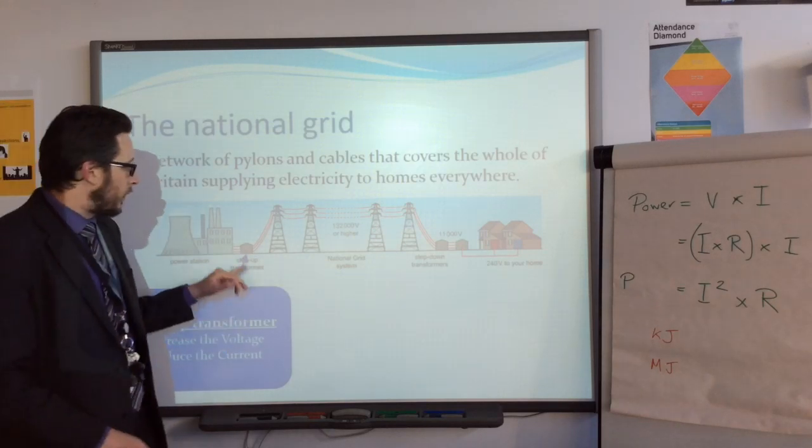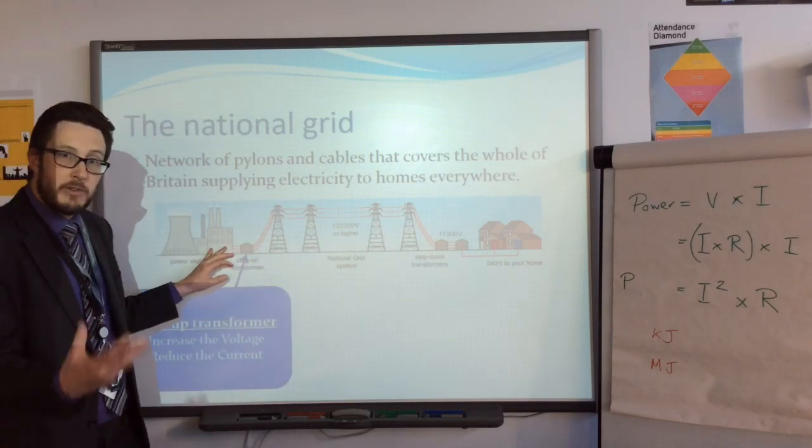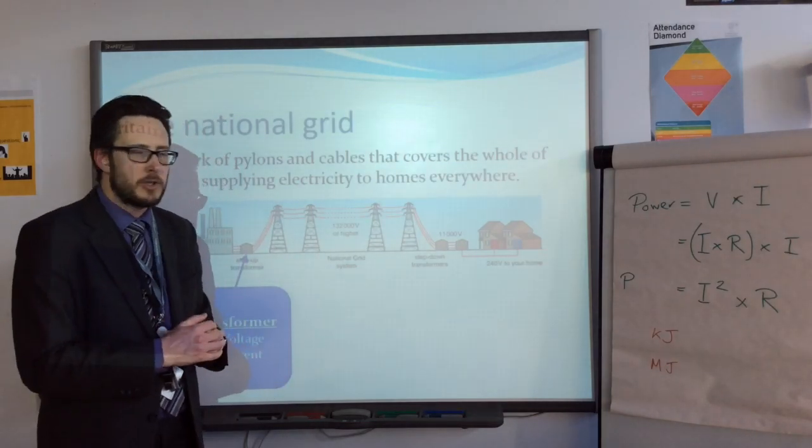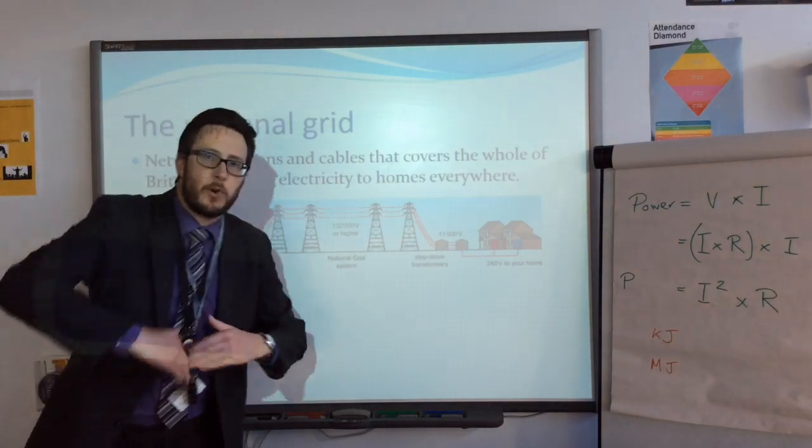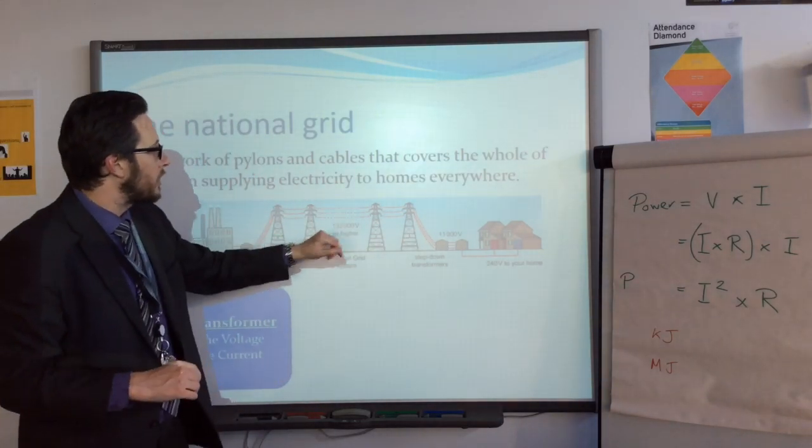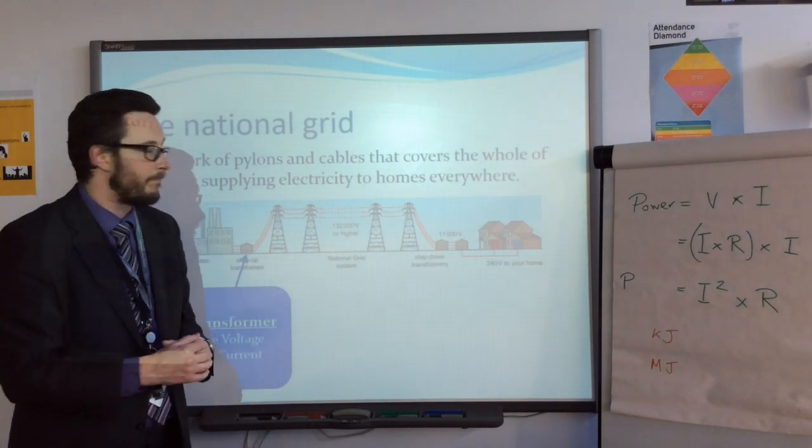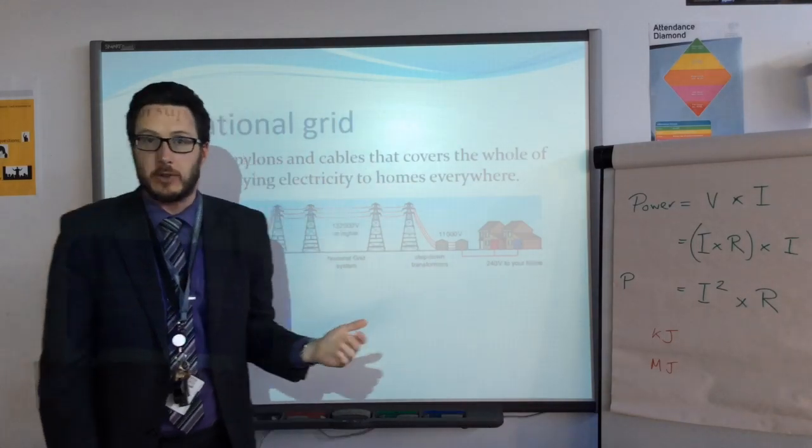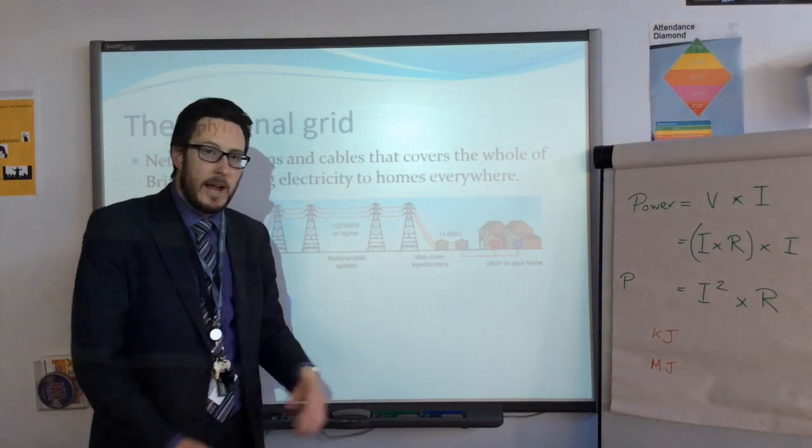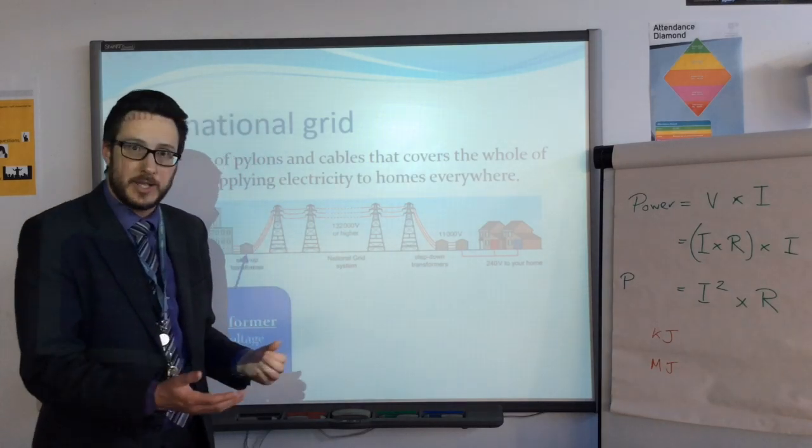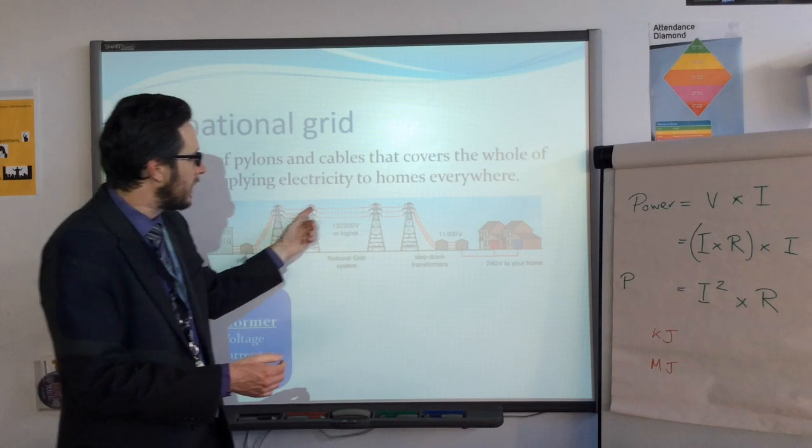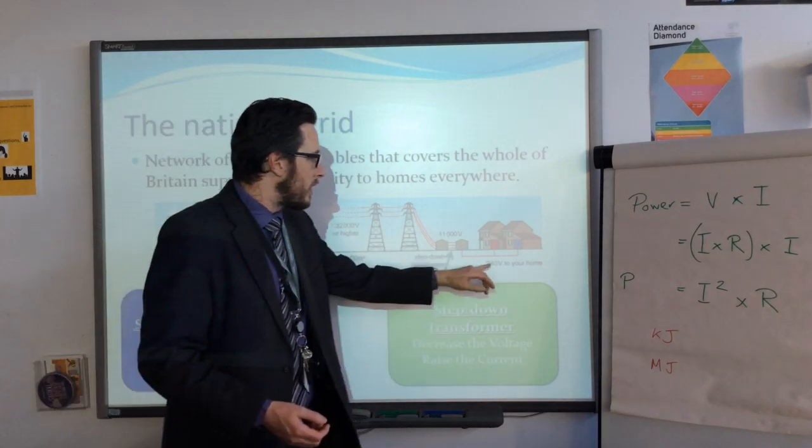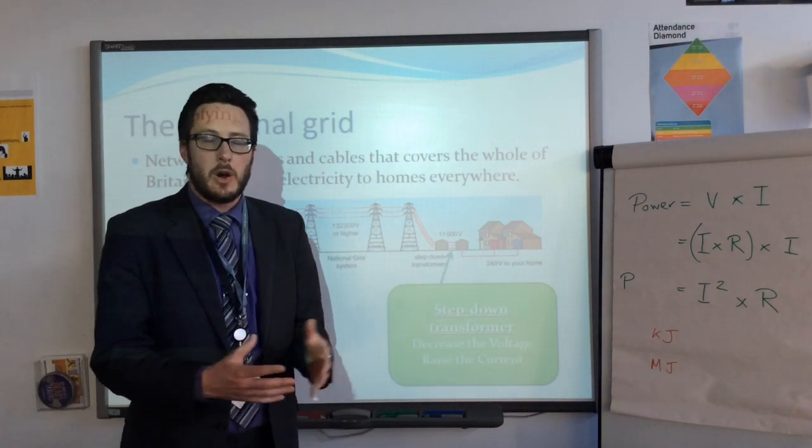Key bits are the step-up transformer. When the power station generates the electricity, it's at a relatively high voltage, let's say around 2,000 volts. They use a step-up transformer to massively increase that voltage up to 132,000 volts. It then passes along through those cables, which are suspended high up in the air to prevent danger of electrocution. They can be buried underground, but that can be costly, and if they need maintenance, it's a hassle to find where the fault is. Then they go down into a step-down transformer, which lowers the voltage back down to a nice 230 volts for your homes and your appliances.